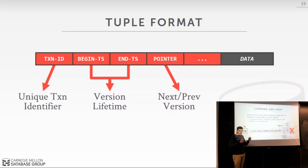In every single tuple we're going to have a header to keep track of metadata about that particular version. You'll always have a transaction ID corresponding to the transaction holding the lock or latch for that physical version. Then we have begin and end timestamps corresponding to the visibility range — any transaction with a timestamp within that range should be able to see this version. We also have a pointer to the next or previous version in our version chain, plus additional fields for extra metadata like read or write locks.